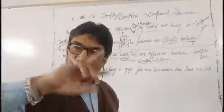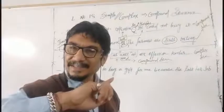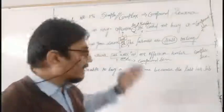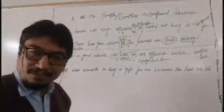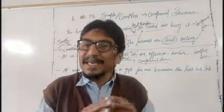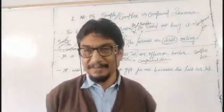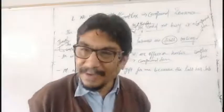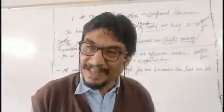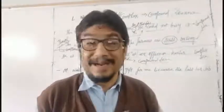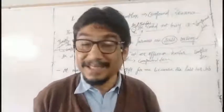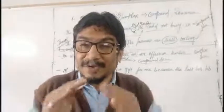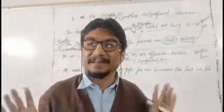Once again, if you revise your previous initial chapters on conjunctions, this would be easy. The names are different but usage of conjunctions we have already completed. The same thing is here with a new banner: simple to compound, simple to complex, simple and complex to compound.